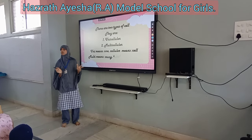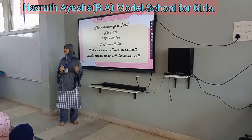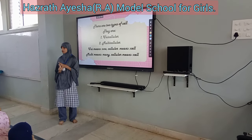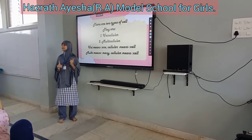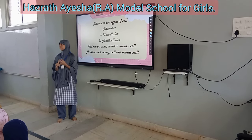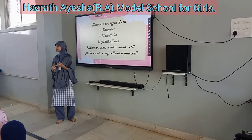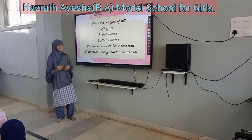There are two types of organisms: unicellular and multicellular. 'Uni' means one and 'cellular' means cell. 'Multi' means many and 'cellular' means cell.